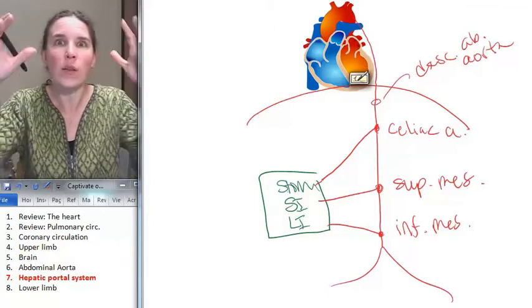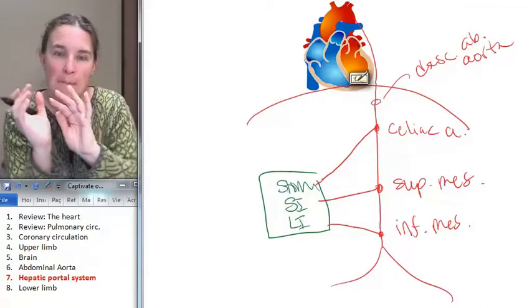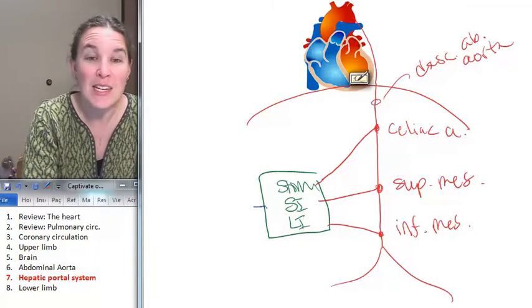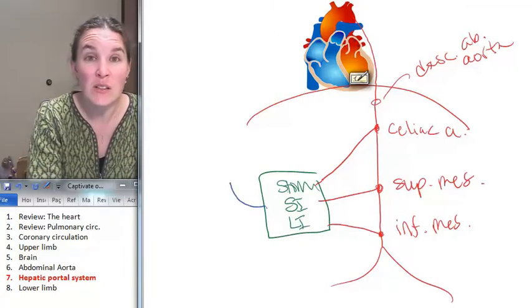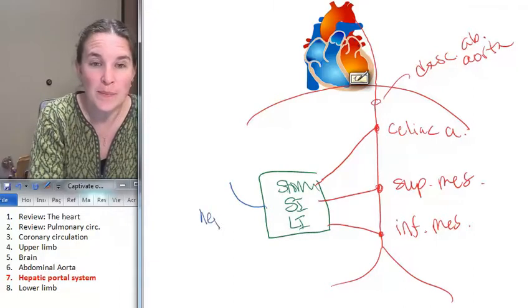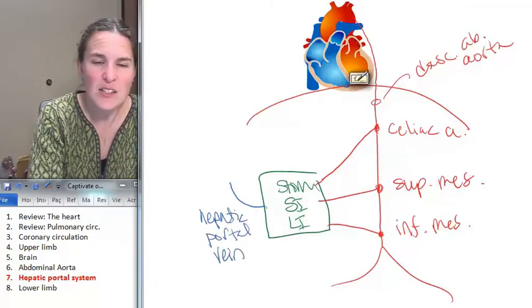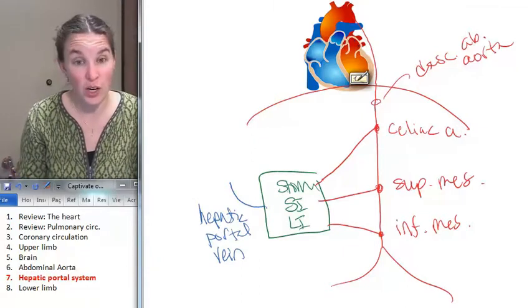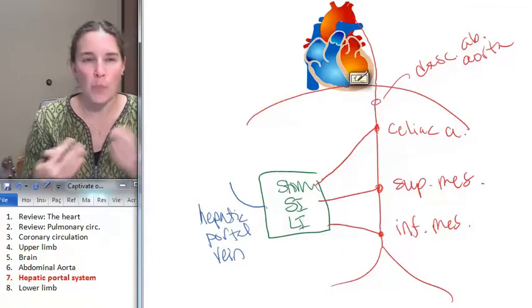There, all of these arteries pass through the stomach, the small intestine, large intestine, and then they feed into a single vein, and it's called the hepatic portal vein. And here's the interesting thing. Hepatic makes you think liver. Portal, a portal system.